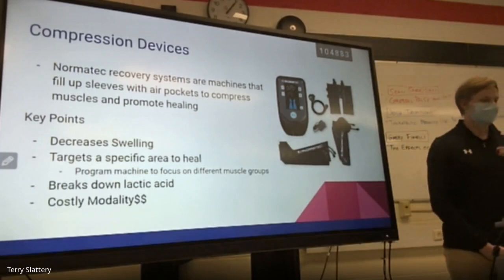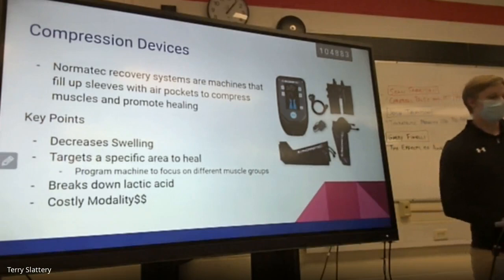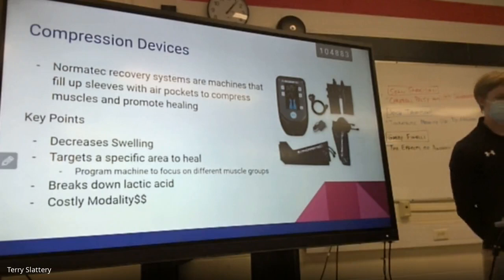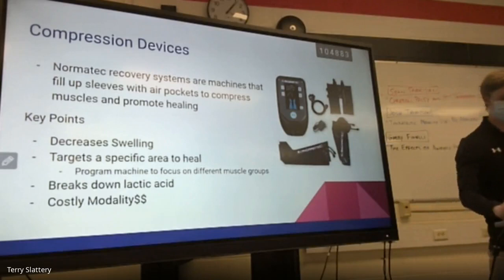Compression devices — I looked into the NormaTec, a recovery system that fills sleeves with air pockets to compress muscles and promote healing. It's great for decreasing swelling and targeting specific areas. You can program the machine to focus on different muscle groups such as the calf, thigh, or arms depending on which sleeves you use. It's great for breaking down lactic acid. However, it's very expensive — the machine usually costs around $2,000.